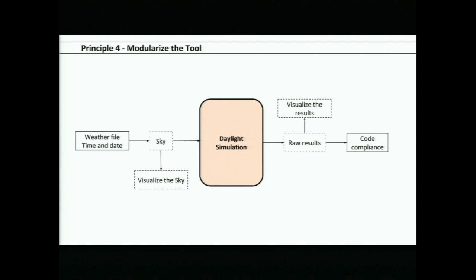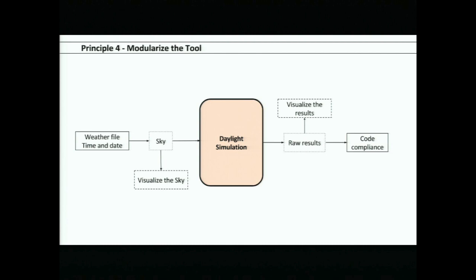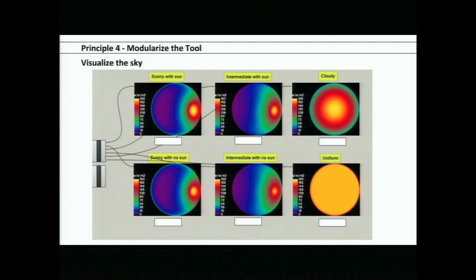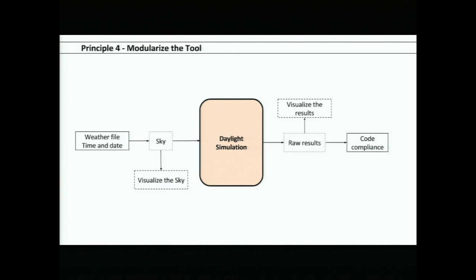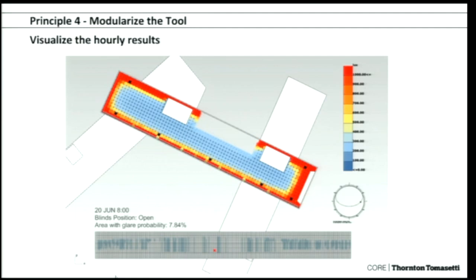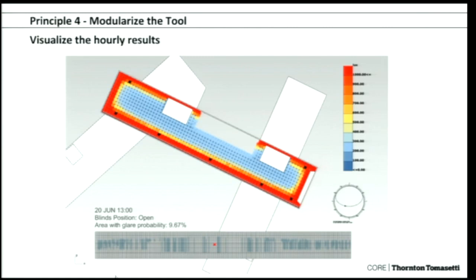Instead of plugging your weather file directly into the engine, you use it to create a sky, check that sky model to make sure it is what you want, and then run your daylight simulation. In Honeybee Daylight, you generate a sky with a separate component, check if it looks as expected, and if not, you can change it. The same applies to visualization results — you can parse through detailed results and scroll through hourly illuminance values with a flood plot showing the actual hour of the day, making sure the simulation is behaving as expected before determining code compliance.